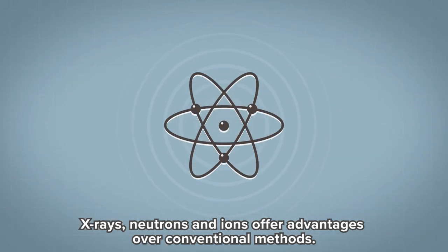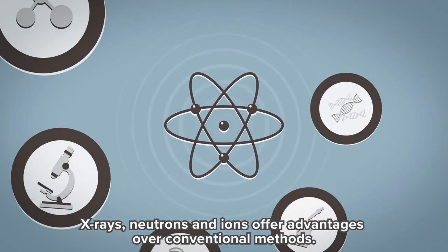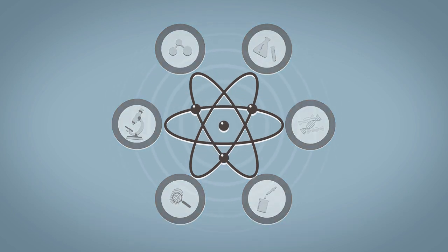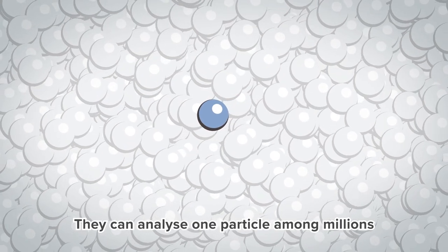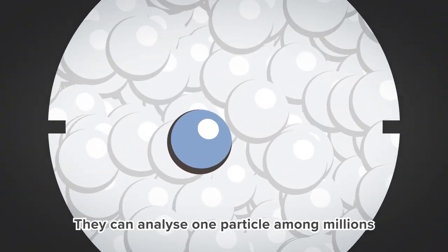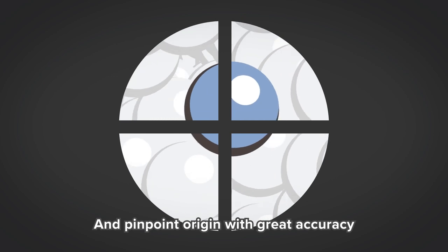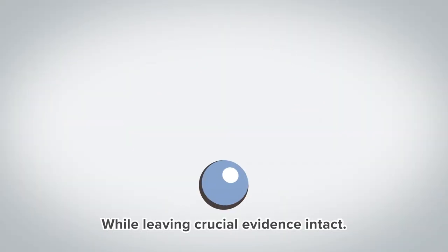X-rays, neutrons and ions offer advantages over conventional methods. They can analyse one particle among millions and pinpoint origin with great accuracy, while leaving crucial evidence intact.